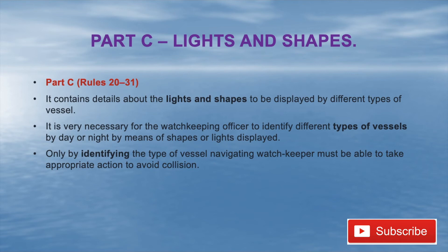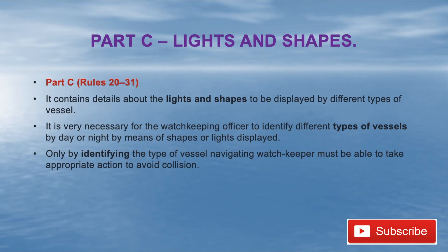Knowledge of Part C is important because only by identifying the type of vessel can the navigating watchkeeper take appropriate action to avoid collision. For example, if you see two red lights you know the vessel is not under command. If you see a red light, you know you're seeing a vessel from the port side. The navigator must have complete information about lights and shapes to avoid collisions.